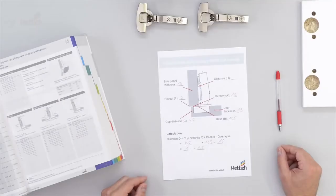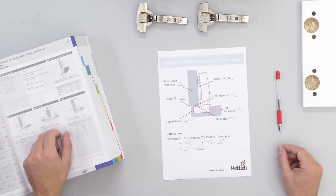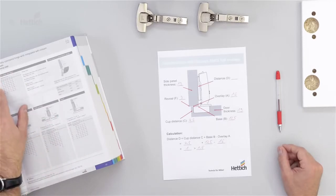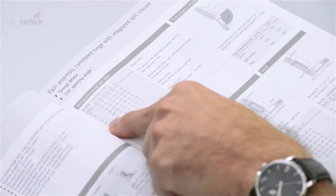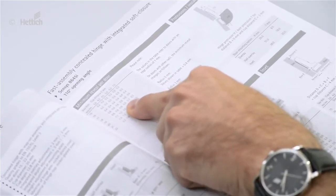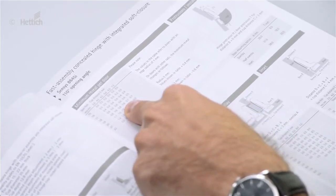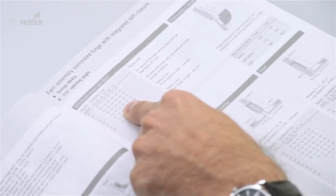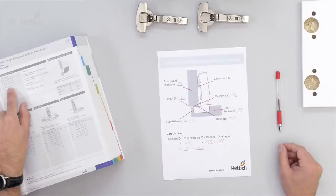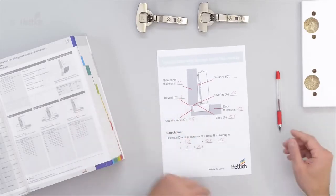In the last step we have to cross-check the minimum reveal. Using the table in the catalog, with a door thickness of 19 mm and a cup distance C of 4.5 mm, the minimum reveal has to be 0.8 mm. In this example we have a reveal of 3 mm, so it's all good.